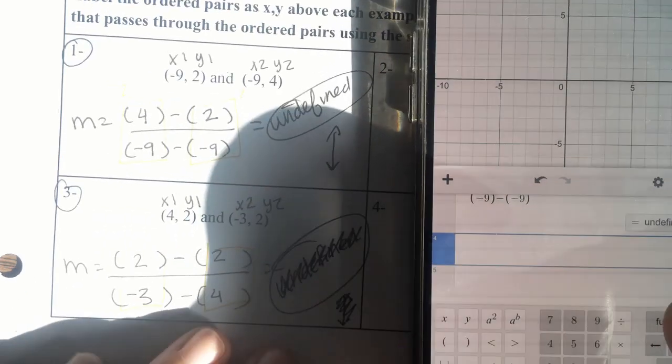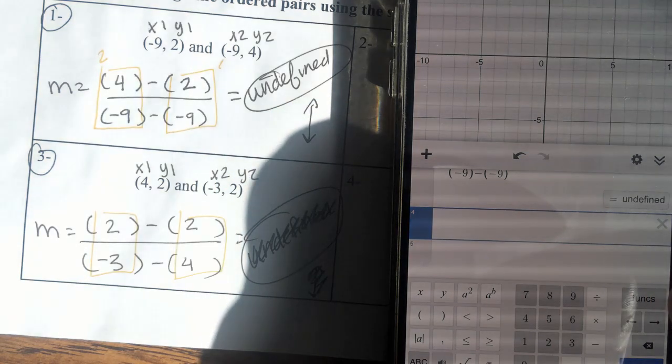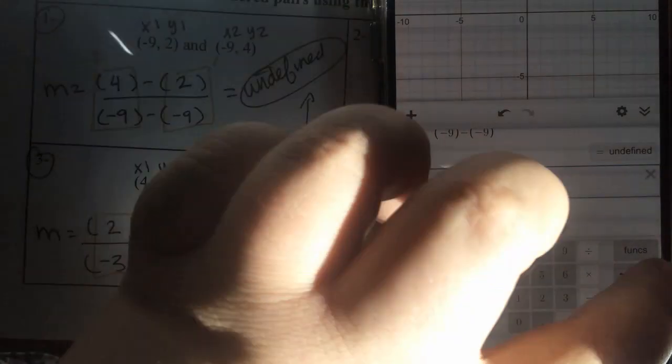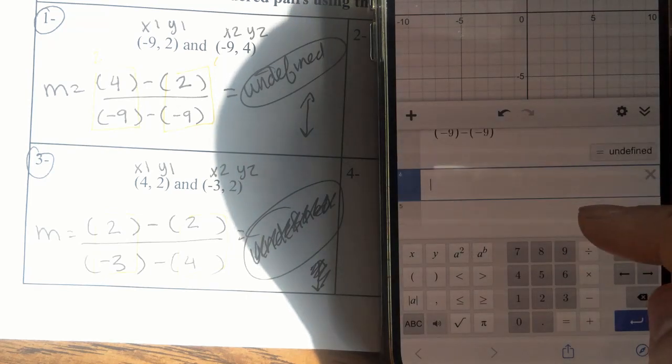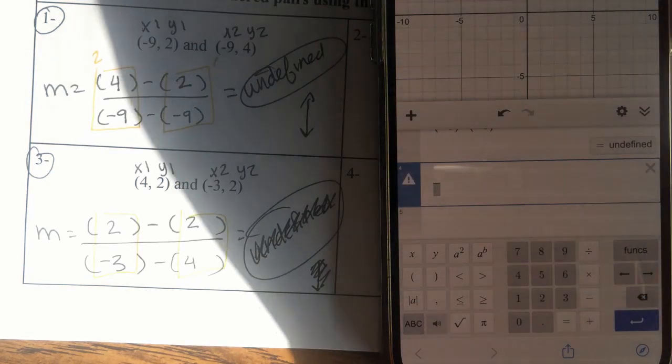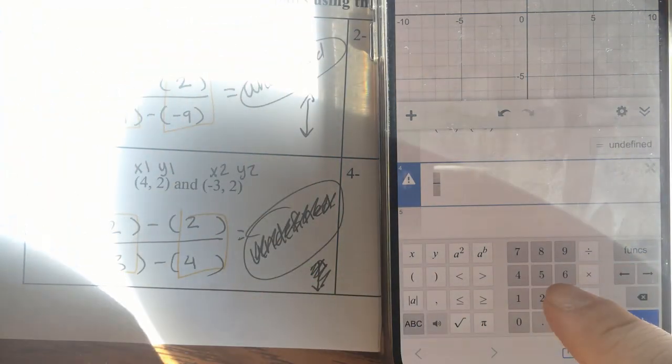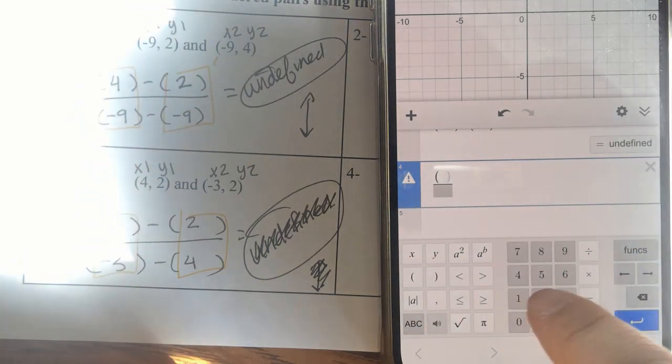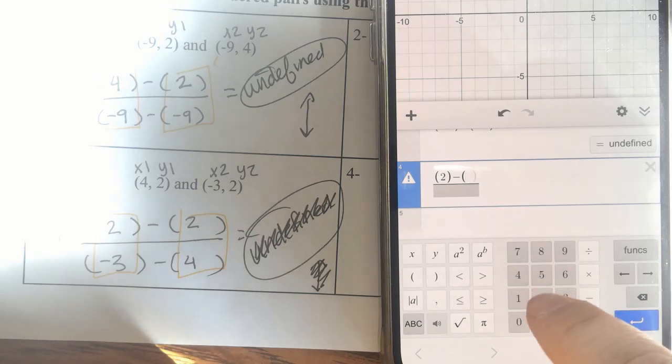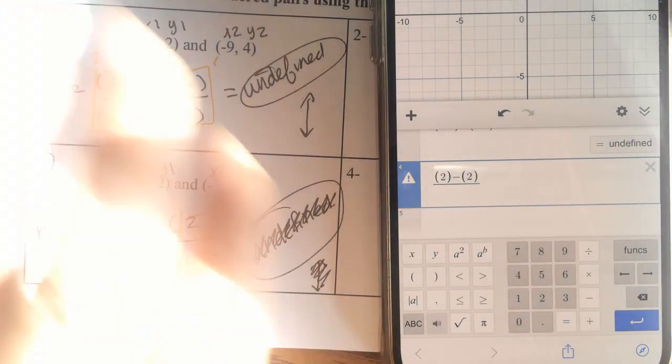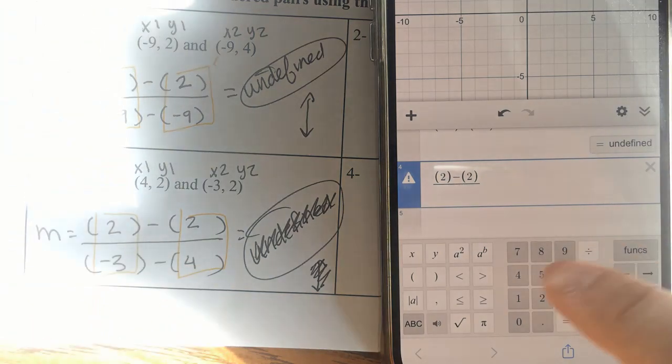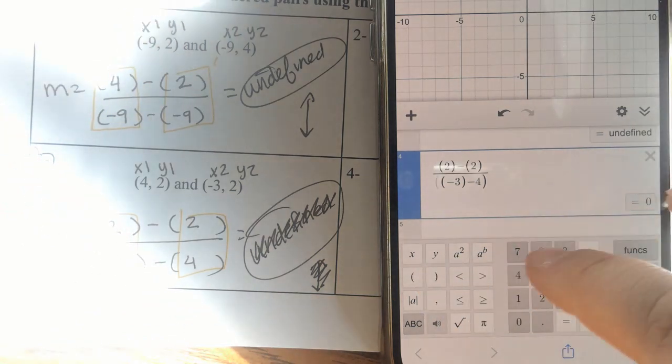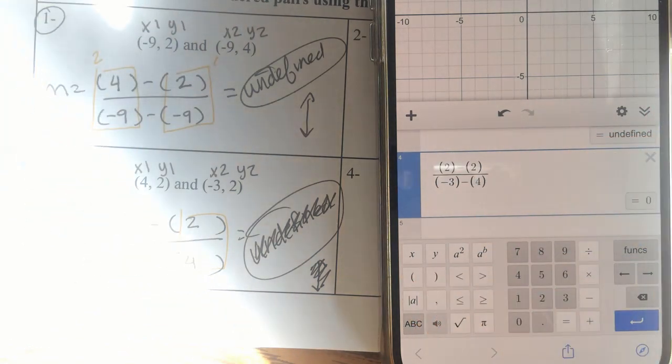So, we've got this. We need to type in 2 minus 2 for the numerator. So, I'll hit the divide sign. We need to divide sign to get my fraction. And then I have 2 minus 2. Parentheses. 2 minus 2. And then in the denominator, we need negative 3 minus 4. Negative 3 minus 4. Parentheses.